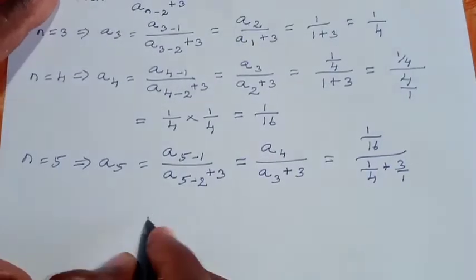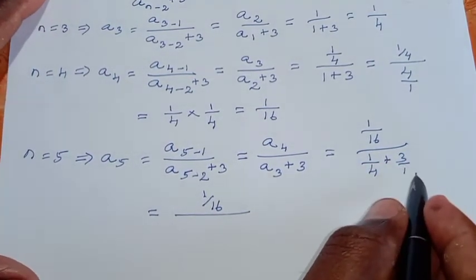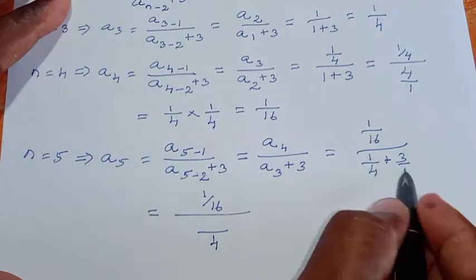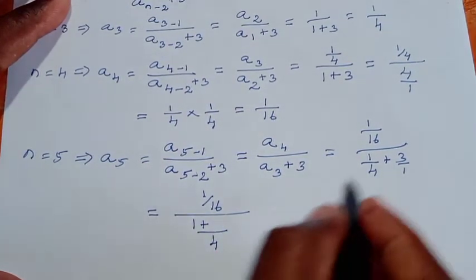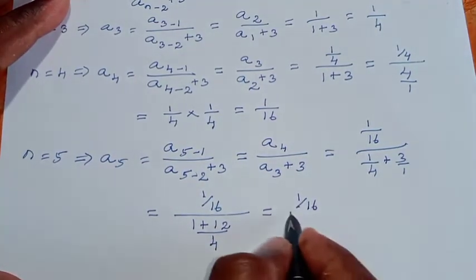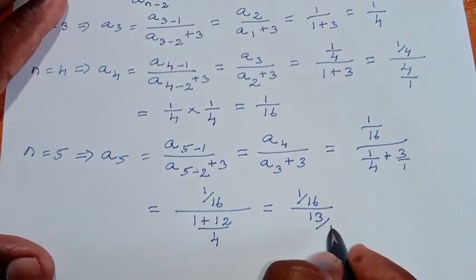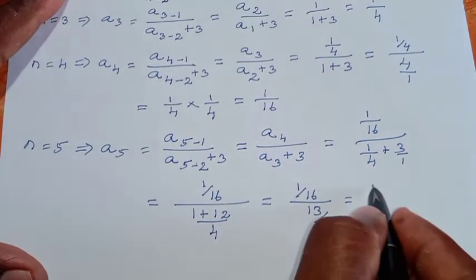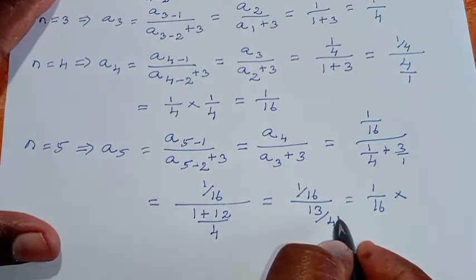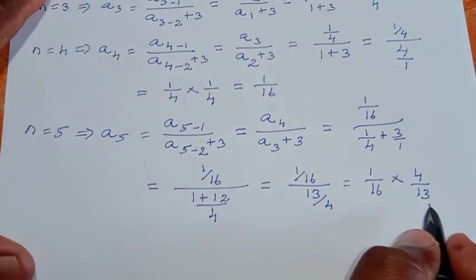So we have 1/16 divided by (1/4 + 3). For the fraction addition in the denominator, using cross multiplication: 1/4 + 3/1, which is (1 + 12)/4 = 13/4. So we have 1/16 divided by 13/4.